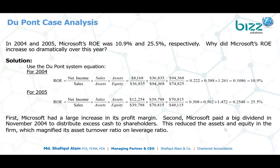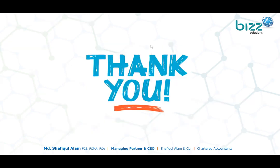That large dividend reduced the equity in the firm, which magnified both the asset turnover ratio and the leverage ratio. This DuPont analysis provides an interesting insight for 2005. I hope this example helps you analyze financial statements as a finance professional or as an investor in the stock market. Thank you, I hope you enjoyed this session.